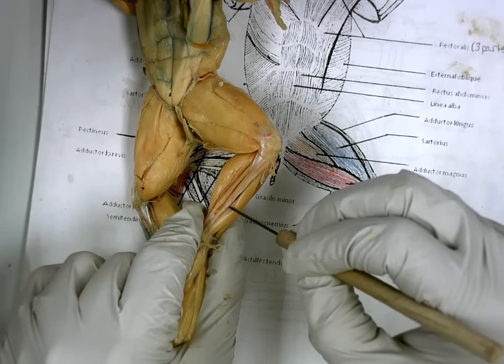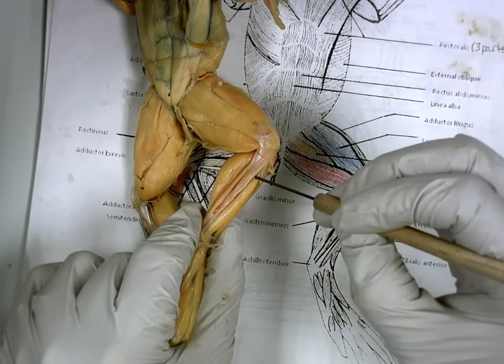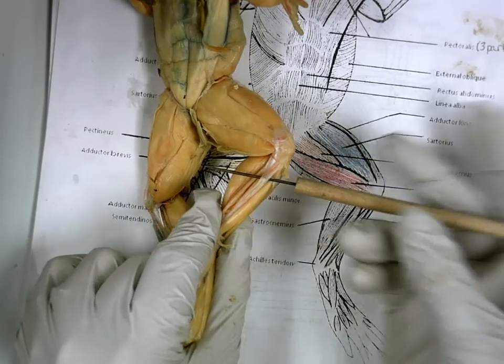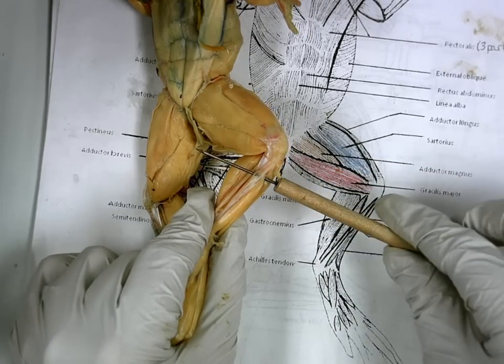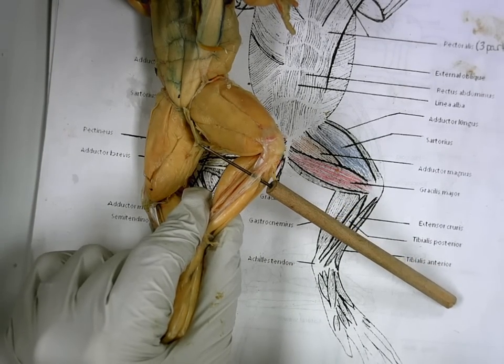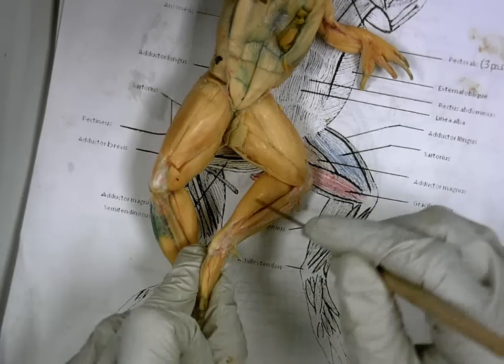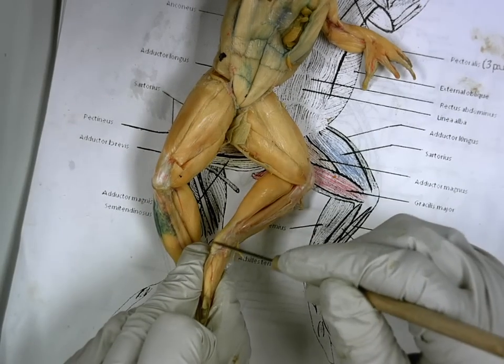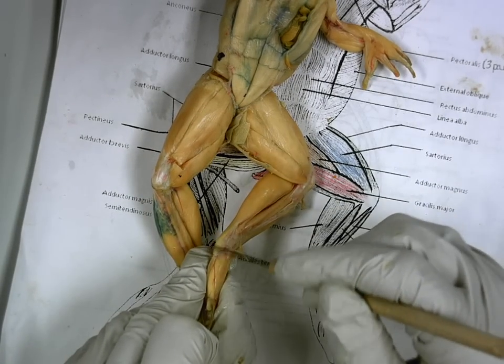If I follow my probe all the way up at tibialis anterior to the top of the A, and I stab in towards the bone, I have a tiny knee muscle. Extensor digitorum longus. Gastrocnemius is held by what thick tendon? Achilles tendon. Excellent.